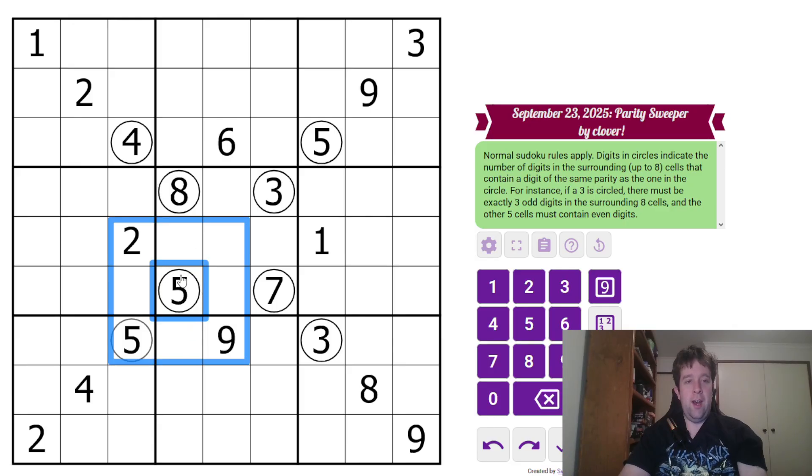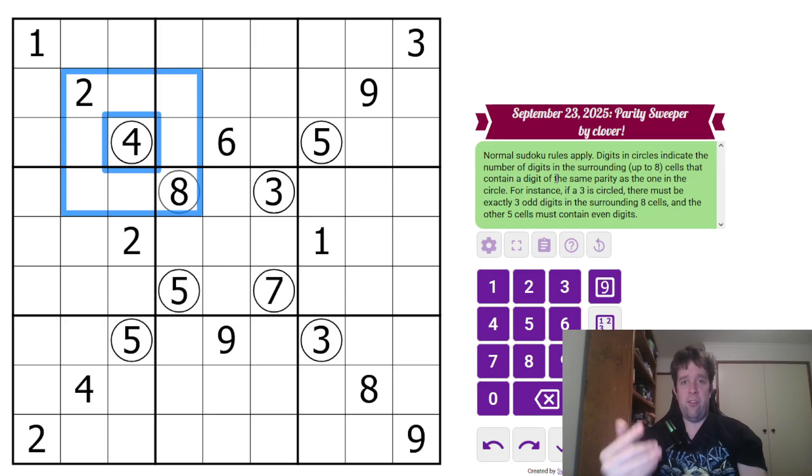This five in the eight cells around it must have exactly five odd digits. This four over here in these eight cells must have exactly four even digits. What that means is digits in circles indicate the number of digits in the surrounding up to eight cells that contain a digit of the same parity, odd or even as the one in the circle. That's it. That's all you need to know to solve today's puzzle. That being said, I'm going to get into it now.